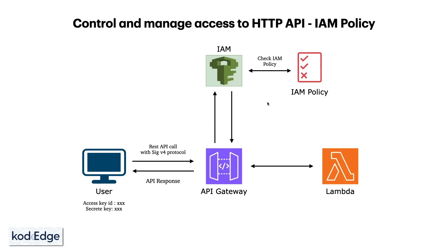Also, when we create a user, we will get the access key ID and the secret key from the IAM service. Using this access key ID and the secret key, the user will call the API from the API gateway and will send them using signature version 4 protocol. API gateway will authenticate the user with the help of IAM service. After the user gets authenticated, an IAM policy check will happen for this called API and after authorization, the user request will get forwarded to the lambda function and the lambda function will send a response back to the user.